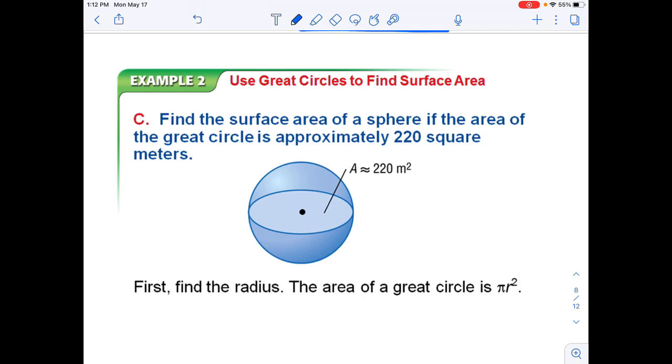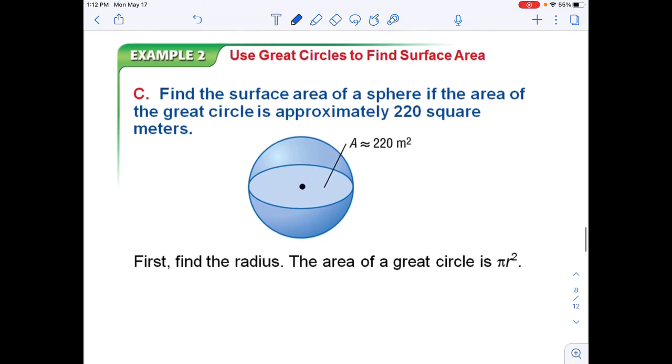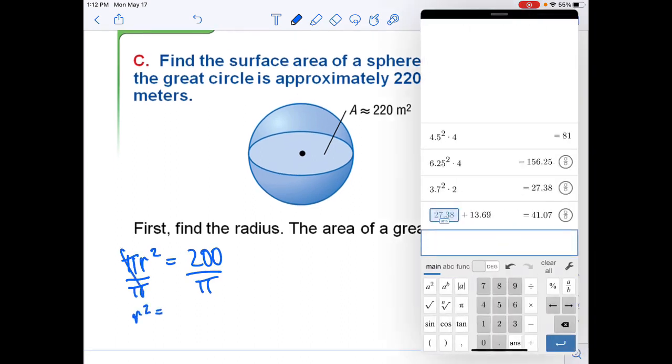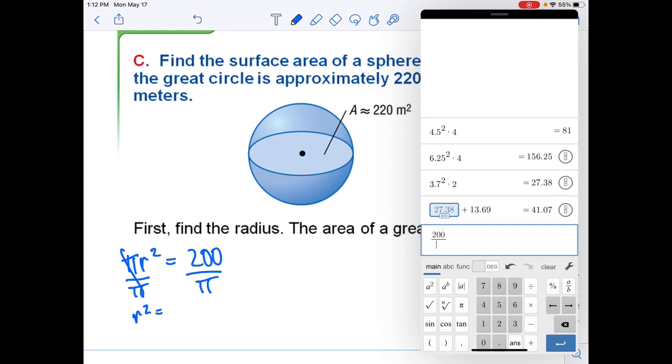And then if you are given the area this time, we also need to find the radius. We know the great circle has an area of πr² and that will help us find our radius given the area. I didn't write this right, 220, not 200. My bad. Hopefully you guys caught that.